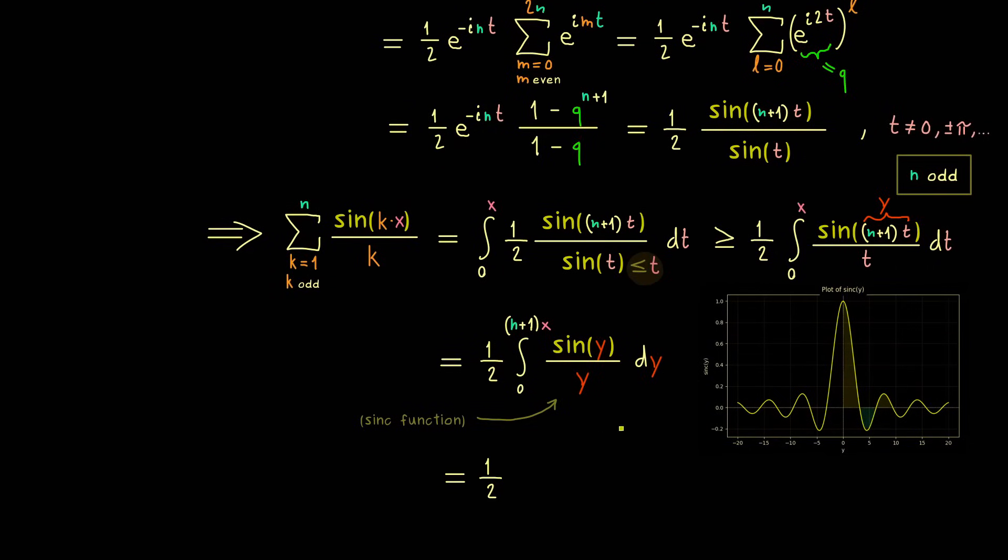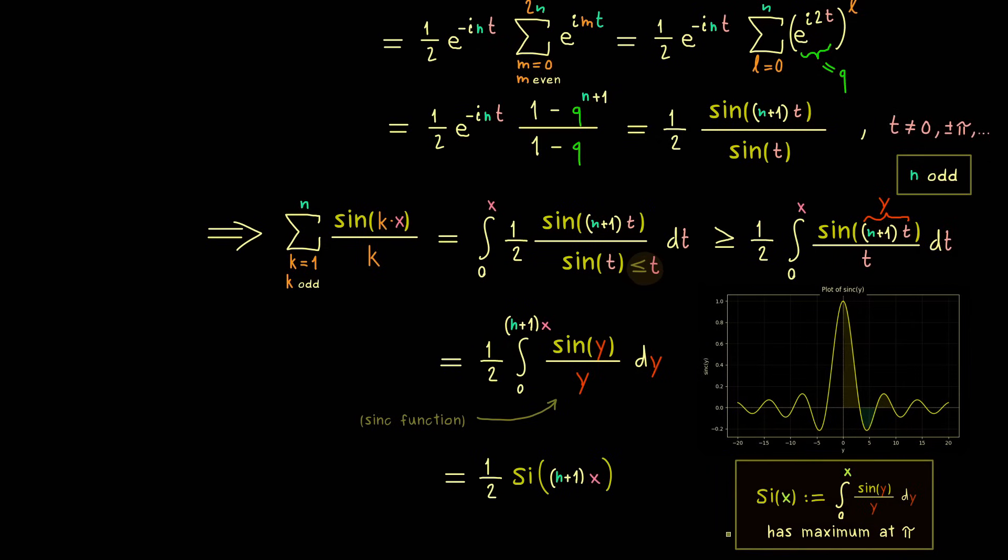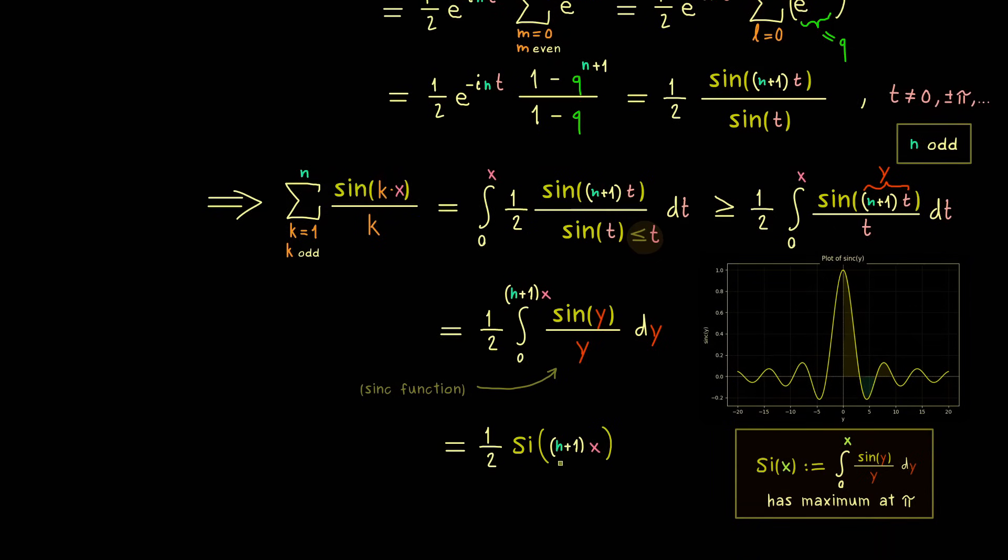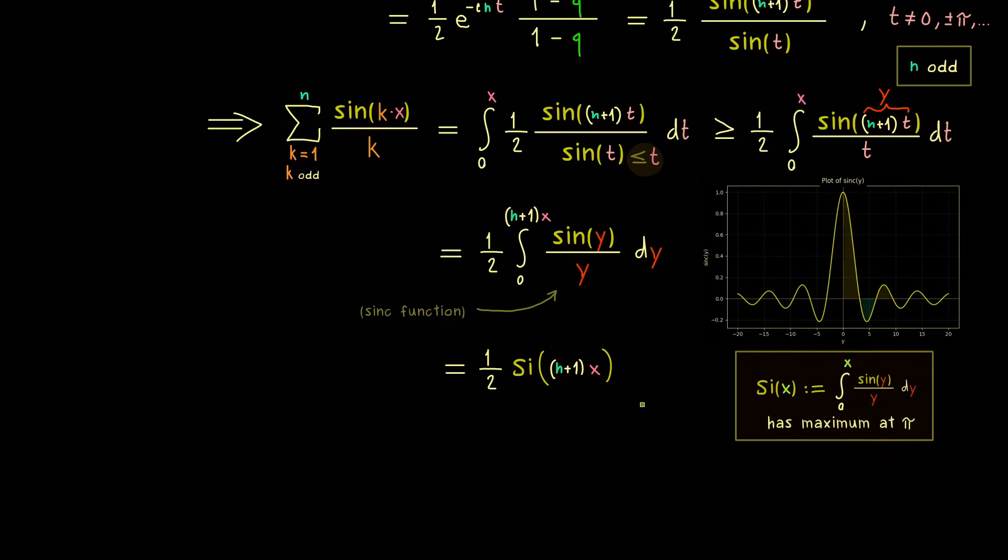This implies that the integral function we are interested in has a maximum at π. Moreover, this whole integral function also has a common name. It's called the sine integral. And usually it's denoted by capital Si. And now we evaluate that at the point n plus 1 times x. So as already mentioned, the important fact we need here is that this sine integral function has a maximum at the position π. And this immediately implies that the function we are actually interested in has a maximum at π divided by n plus 1.